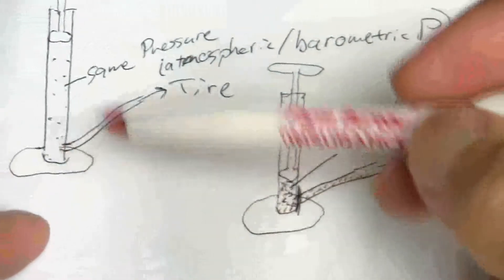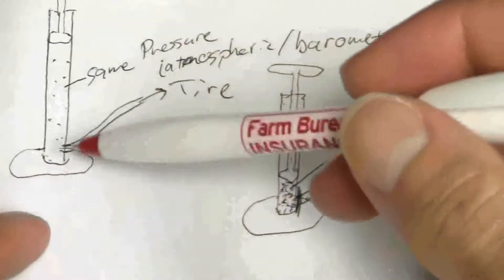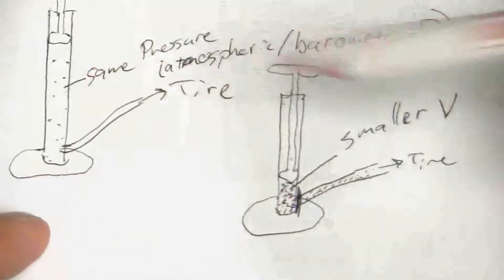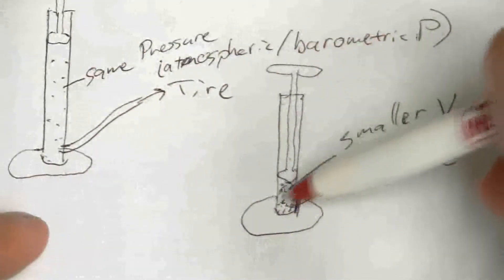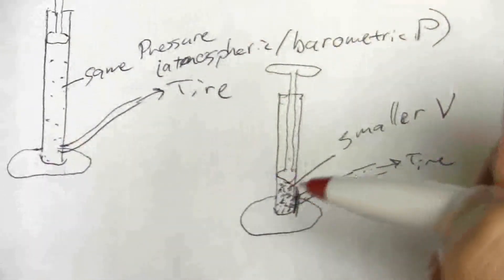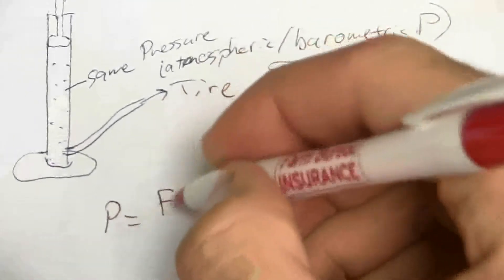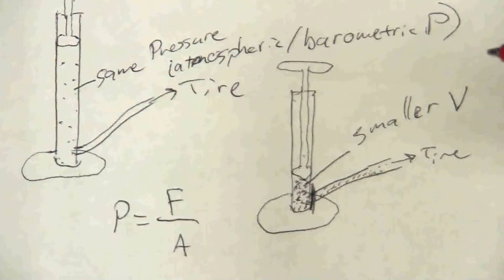The pressure increases, right? Here it's atmospheric pressure, but now I have those same molecules, the same number of molecules bouncing around in there, but they're bouncing on a smaller area. You remember pressure is defined as force per unit area.